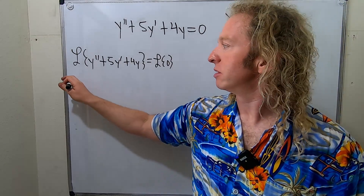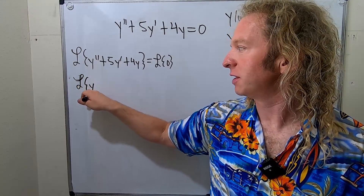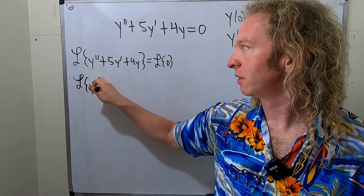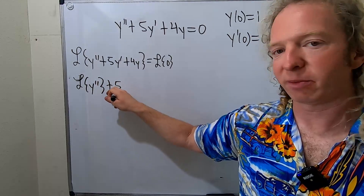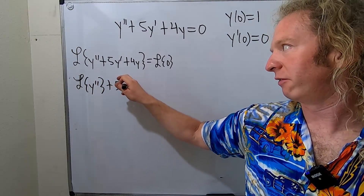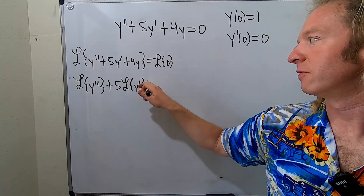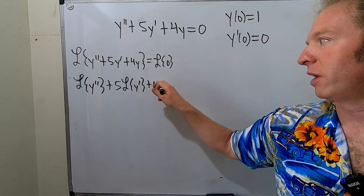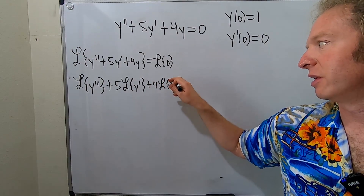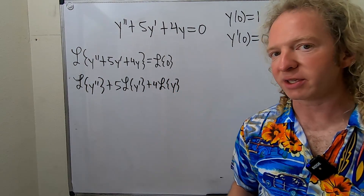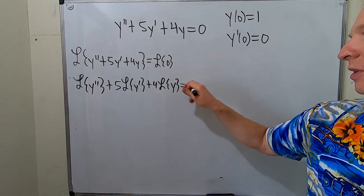So this is the Laplace of y double prime, plus 5 times the Laplace of y prime, plus 4 times the Laplace of y. And the Laplace of 0 is 0, so this is equal to 0.